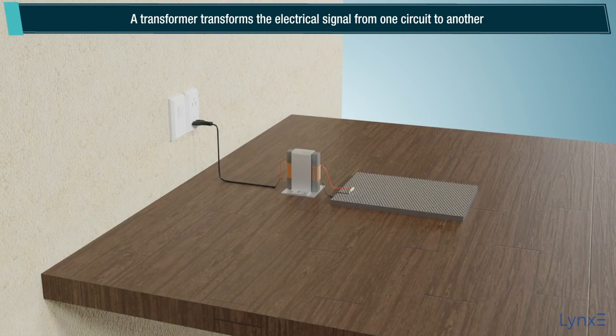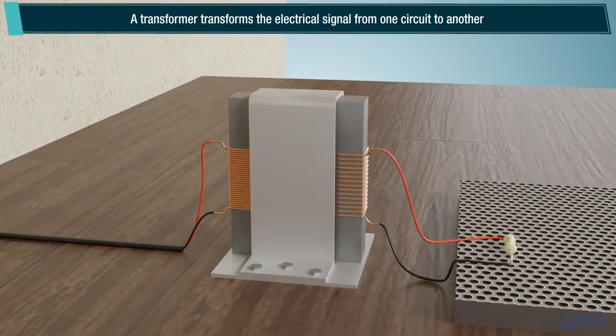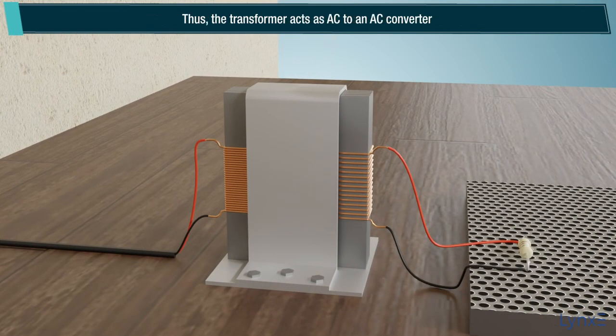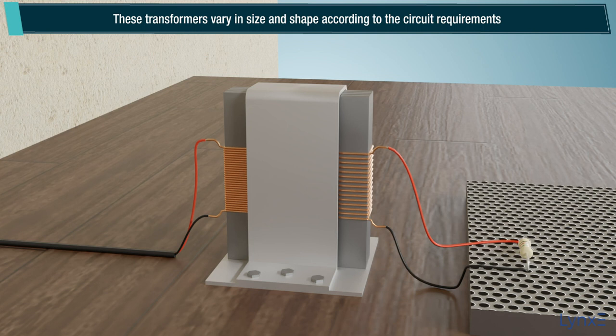A transformer transforms the electrical signal from one circuit to another. Thus, the transformer acts as AC to AC converter. These transformers vary in size and shape according to the circuit requirements.